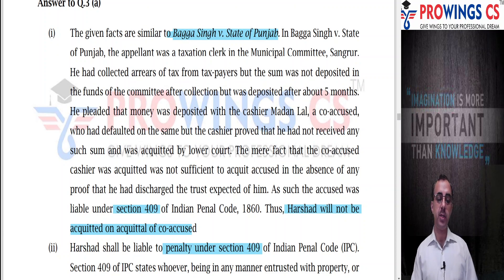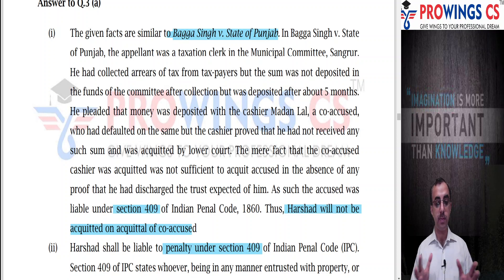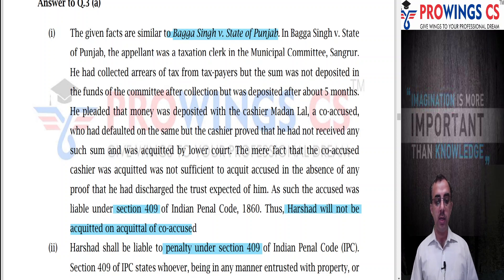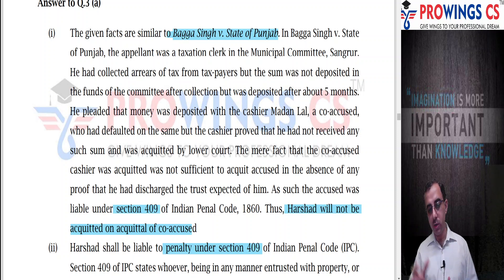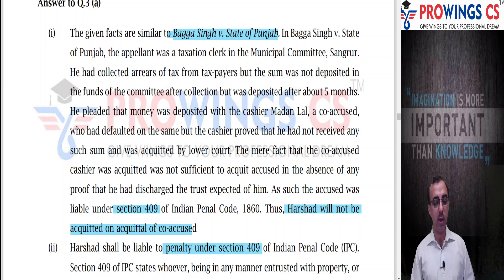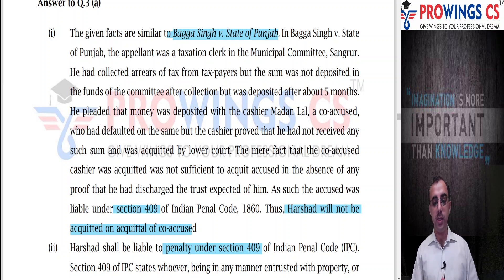In the Bhangha Singh case, the appellant was a taxation clerk in the Municipal Committee of Sangrur who collected arrears of tax from taxpayers but deposited the sum only after five months. He pleaded the money was deposited with cash-taker Madhan Lal, the co-accused. But the cashier proved he had not received any sum and was acquitted by the lower court. The court held that the mere fact that the co-accused cashier was acquitted was not sufficient to acquit the main accused in the absence of proof that he had discharged the trust expected of him. Thus Harshad was not acquitted.